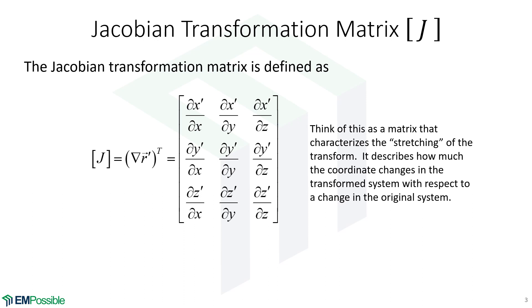We get this tensor. It's three by three, simply because we live in a three-dimensional world. If we ever discover the fourth dimension, our Jacobian matrices will then be four by four. But right now, they're three by three.